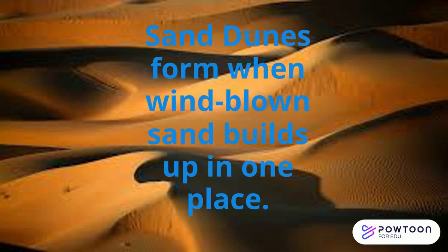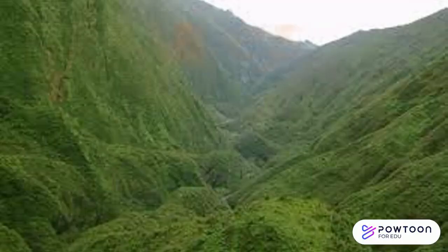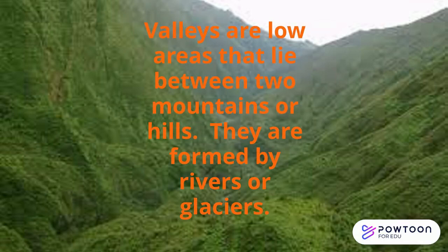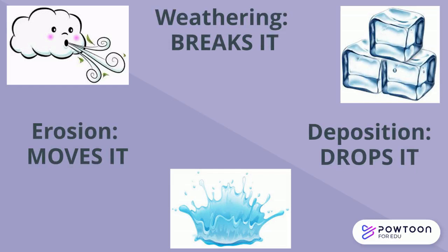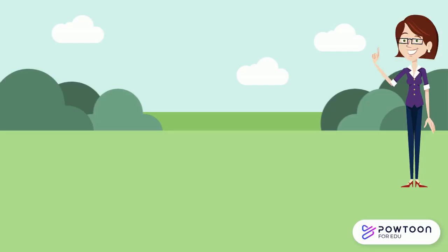Valleys are low areas that lie between two mountains or hills. They are formed by rivers or glaciers. Remember: weathering breaks it, erosion moves it, deposition drops it.